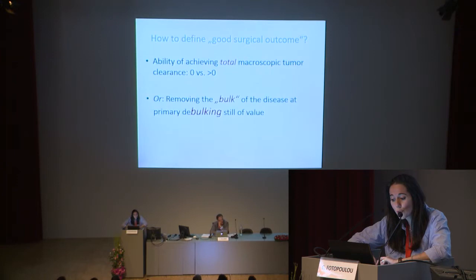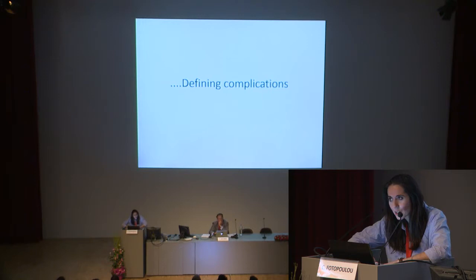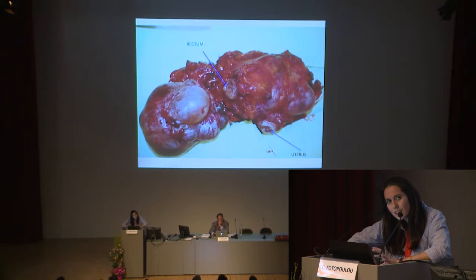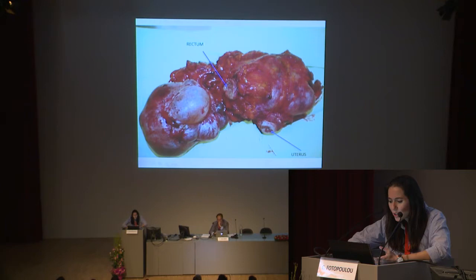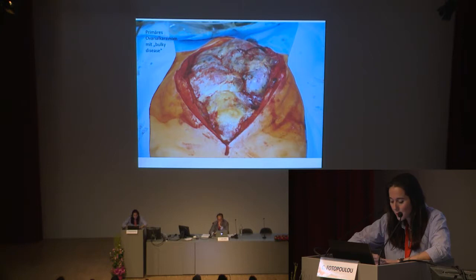How do we define good surgical outcome? Is it the ability to achieve total macroscopic tumor clearance, or just debulking? Many would say very accurate preoperative imaging aims to define and reduce complications. But let's redefine complications. We have two types: iatrogenic complications from radical surgery, and complications induced by the tumor itself — such as unblocked resections with massive infiltration where if you don't resect, you will soon have a fistula or bowel perforation.